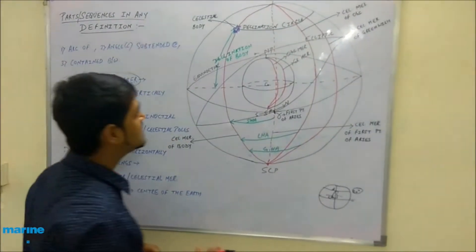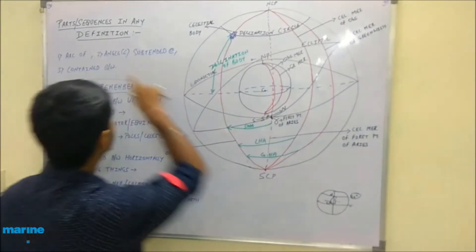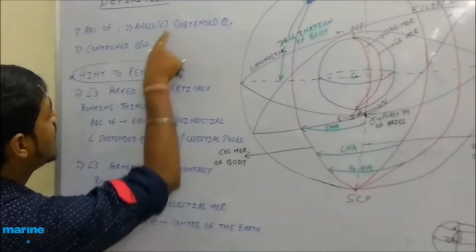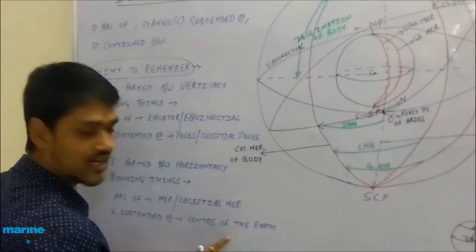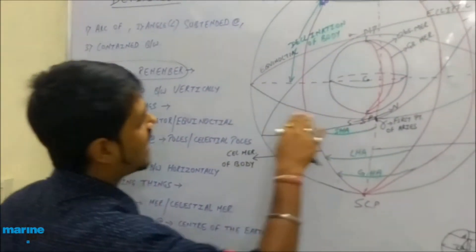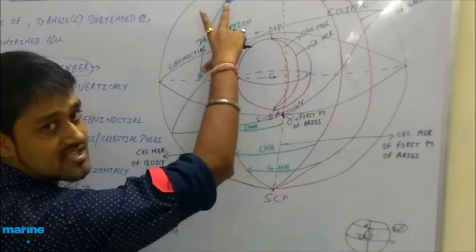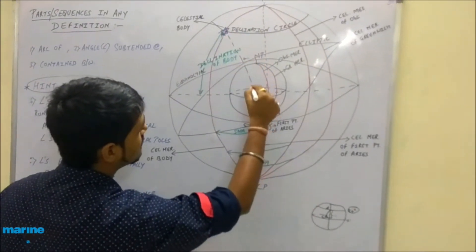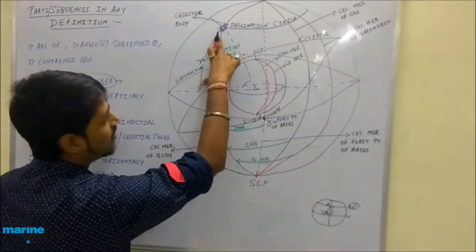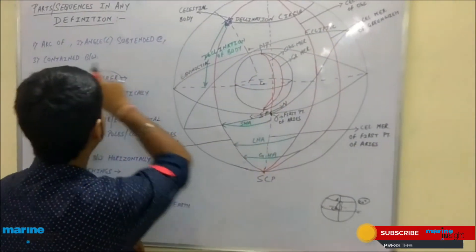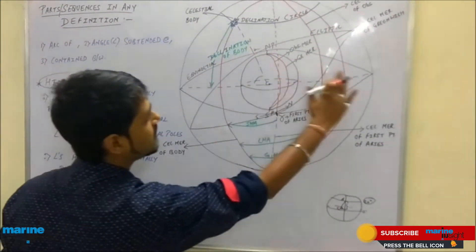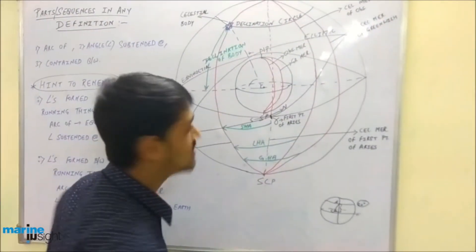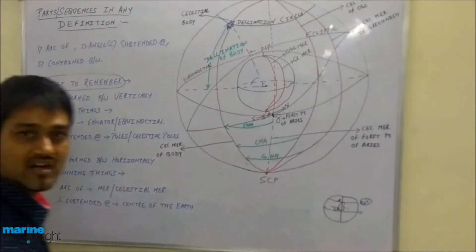The parallel of latitude on earth corresponds to the parallel of declination on the celestial sphere. Declination can be defined as: arc of the celestial meridian or angle subtended at the center of the earth, contained between the equinoctial and the parallel of declination passing through the body. A simple definition for declination — I hope you can remember it now very easily.